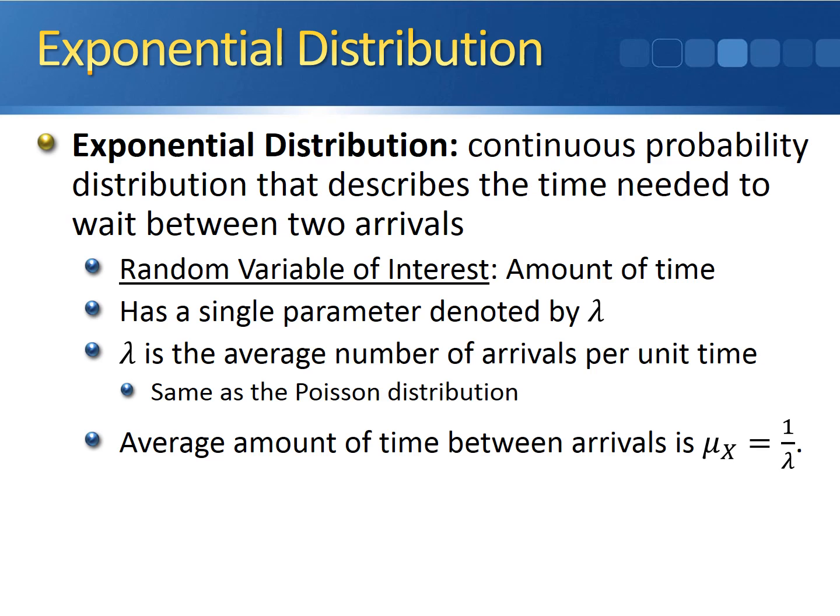In the exponential distribution, we can calculate the average amount of time needed to wait between arrivals, and that average amount of time is one over lambda.